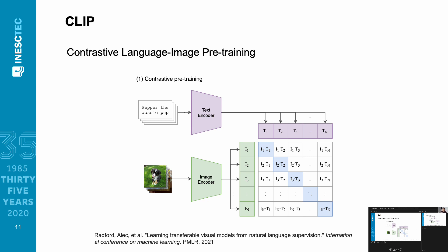Now we get to CLIP. CLIP stands for Contrastive Language-Image Pre-training, and it's been called the most influential model from OpenAI — the company that created ChatGPT and other models. CLIP is a multi-modal model that works with both image and text. It has an image encoder, which can be either a convolutional neural network (e.g., ResNet-50) or a Visual Transformer (ViT), and a text encoder, typically the BERT model. The idea is that we get an image and a description of that image as a pair, pass them through their corresponding encoders, and train contrastively.